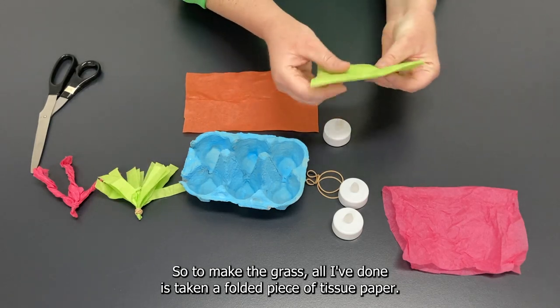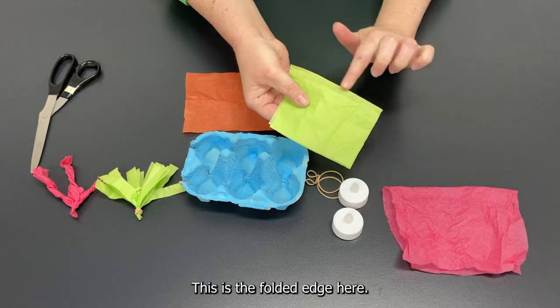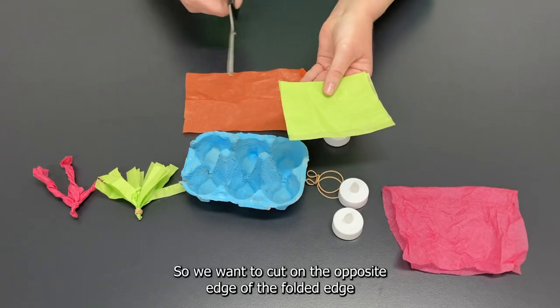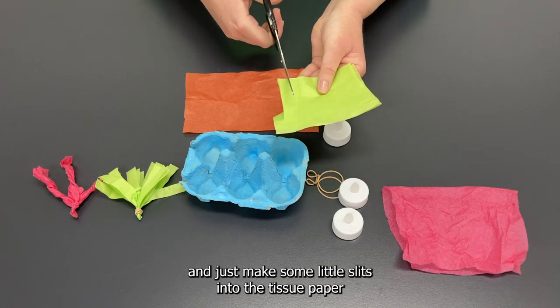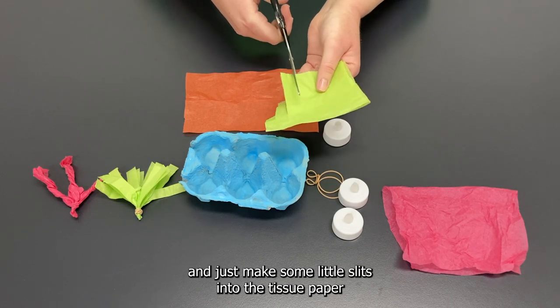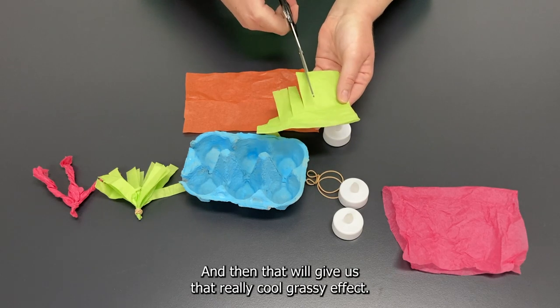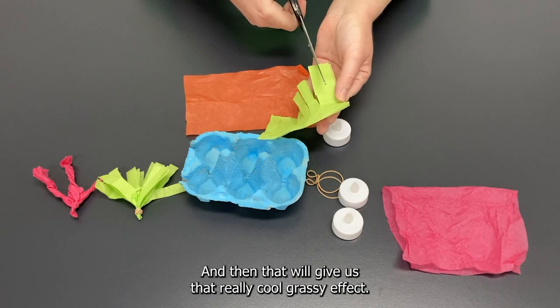So to make the grass all I've done is taken a folded piece of tissue paper. This is the folded edge here so we want to cut on the opposite edge of the folded edge and just make some little slits into the tissue paper and we're making sure we're not going all the way through to the fold and then that will give us that really cool grassy effect.